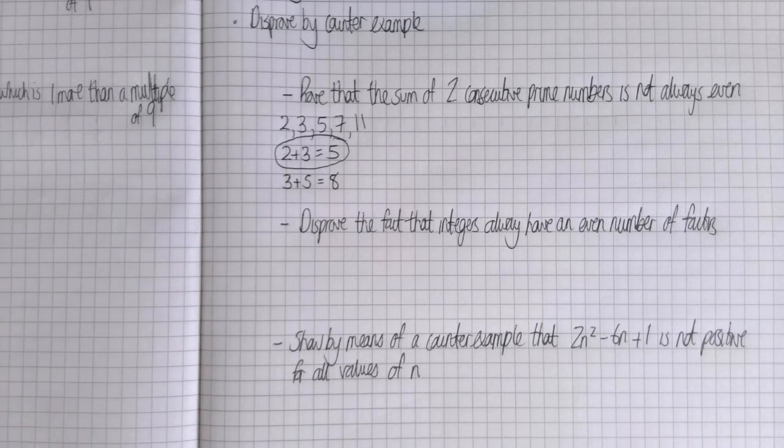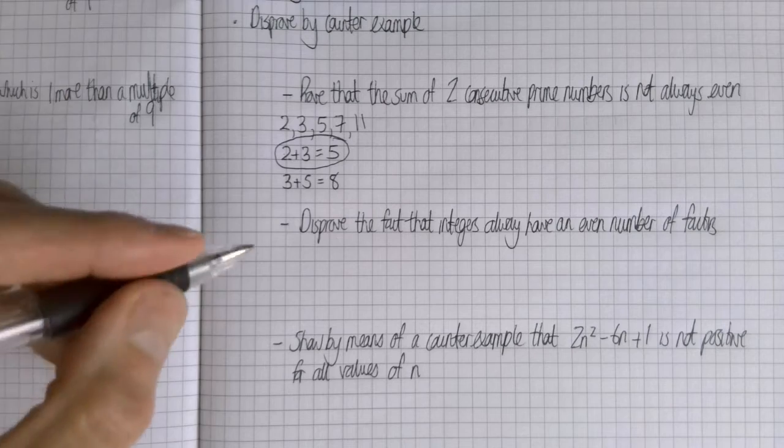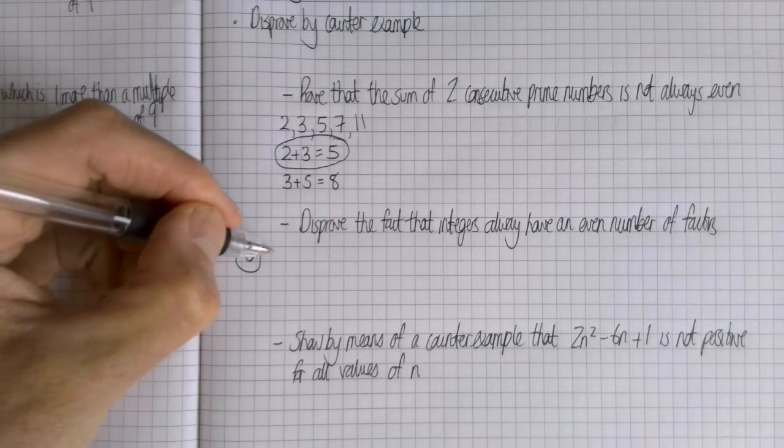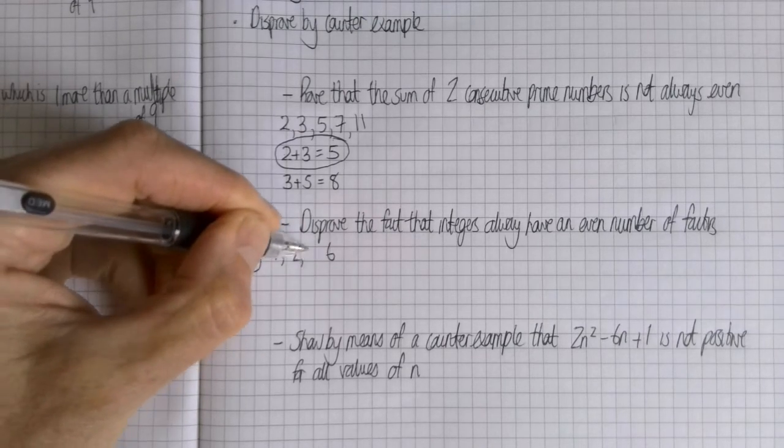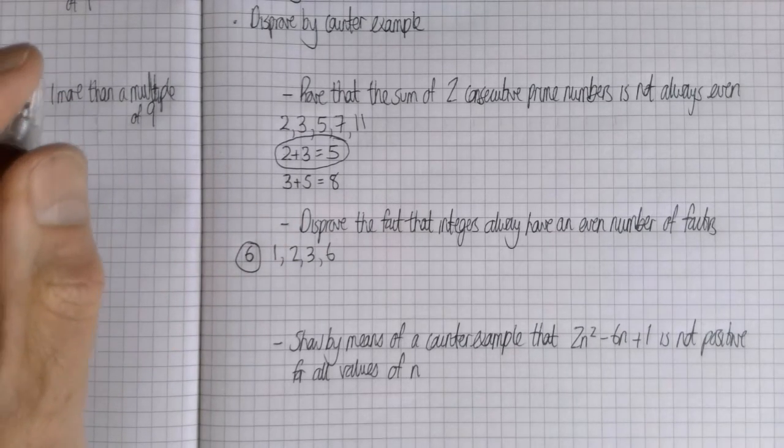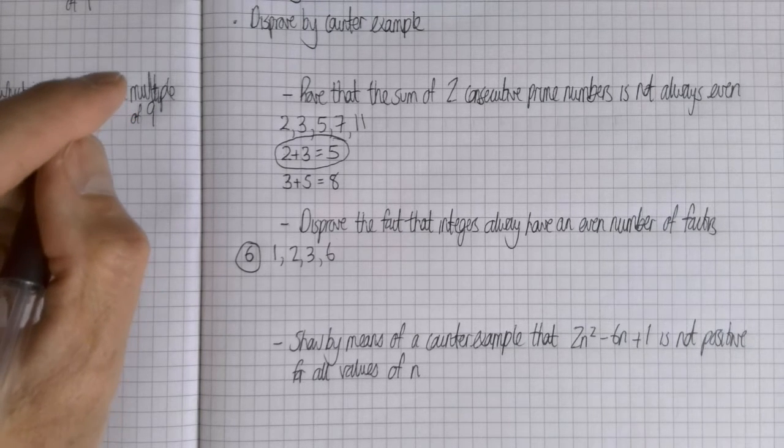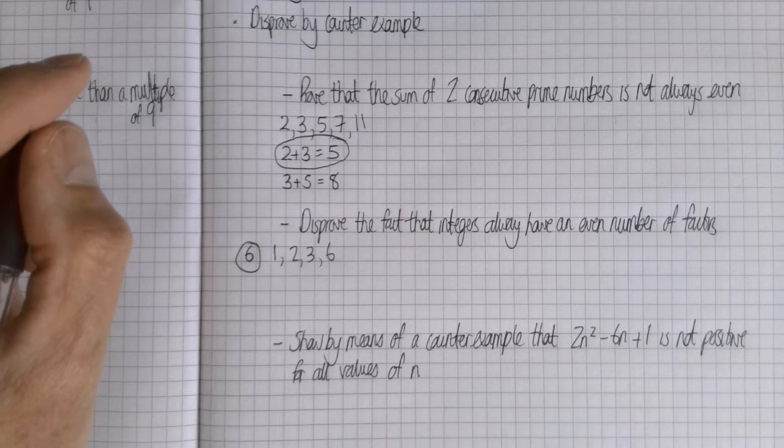But this is the counter example, so that is the counter example which shows that it is not always even. Can you come up with an integer that doesn't have an even number of factors? I mean for example six does have an even number of factors, doesn't it? Because you could do 1 times 6 and 2 times 3. I always think about factors in terms of multiplying, but can you find an example of one that doesn't have an even number of factors? Have a think about it while I pause.